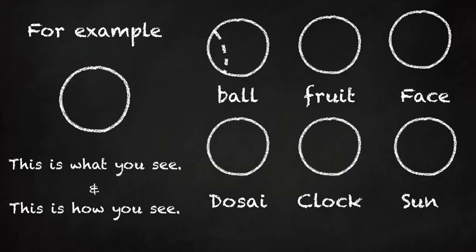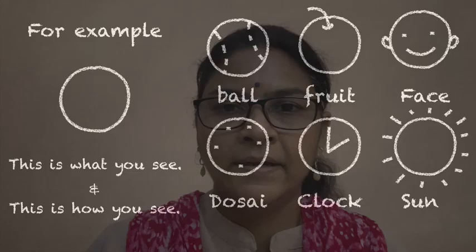By adding just a few lines and dots, you see a circle as many different things. This is how we see things differently. You are trying to relate this shape to many different things that makes a connection with the same shape.